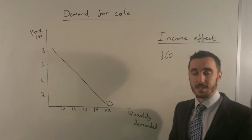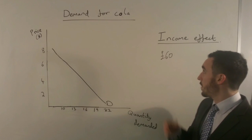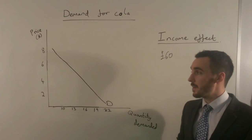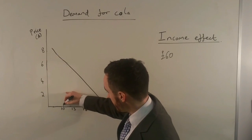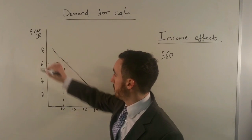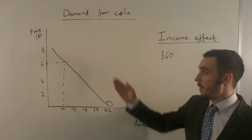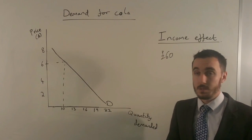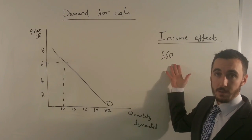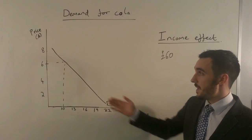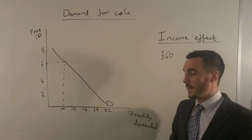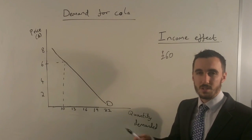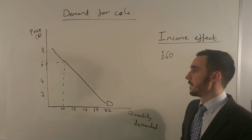So in this case we're looking at the demand for cola. With my income at £60, I'm able therefore to buy 10 bottles of cola when the price is £6. Because I have £60 as my income and therefore if the price is £6, I'm able to buy 10 cans of cola and we assume I'm also willing to buy those cans as well.